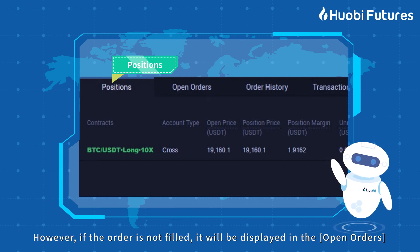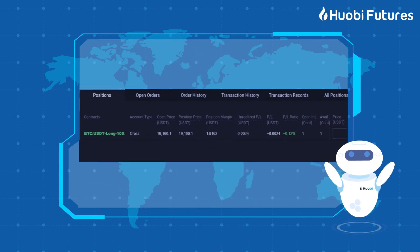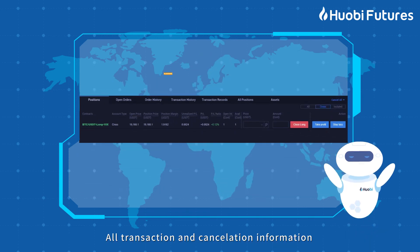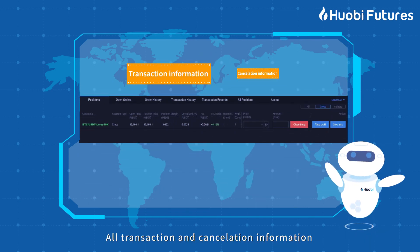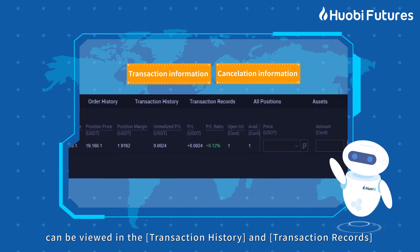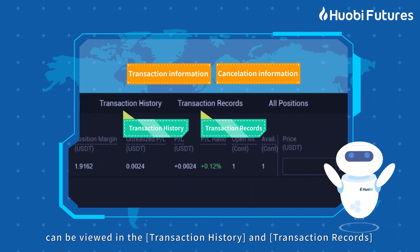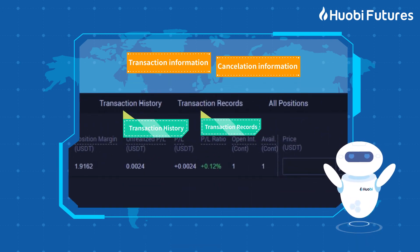However, if the order is not filled, it will be displayed in Open Orders. All transaction and cancellation information can be viewed in the transaction history and transaction records.